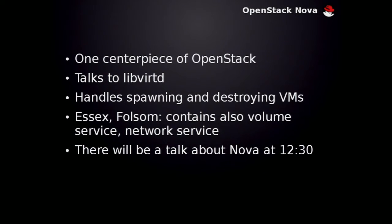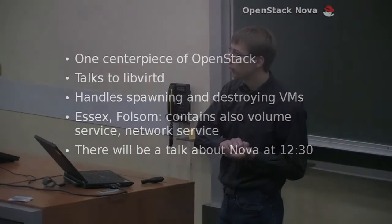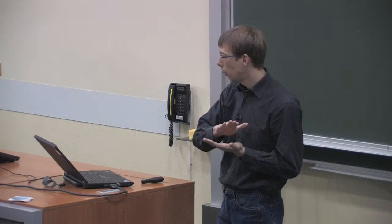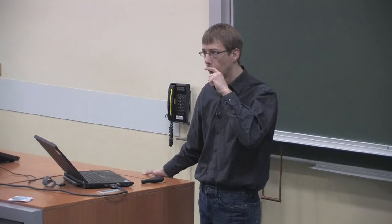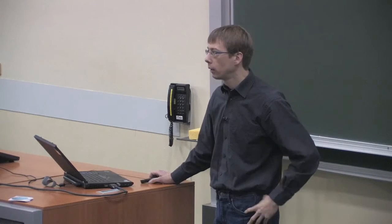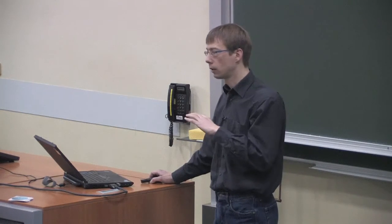So talking about the components, we have something called Nova. It's kind of centerpiece of OpenStack because it provides compute power. In our case, in Fedora and also in RHEL, it talks to libvirt. But we have also other hypervisors supported, like Hyper-V - who would use that? - or Xen, or VirtualBox, and so on. And we have vendors providing other hypervisors to OpenStack as contributors. So that's why we have some code from Microsoft in OpenStack.